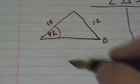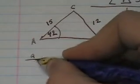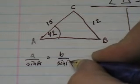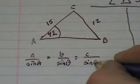So we need to write the law of sines. So we have a over sine A equals b over sine B equals c over sine C.